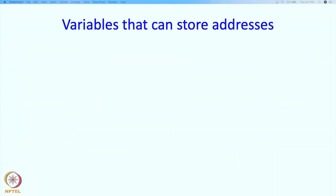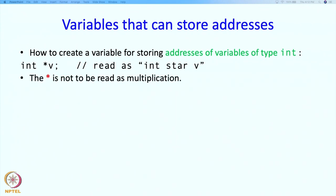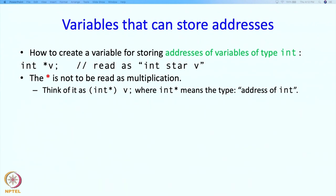Now we know how to print out or get to addresses. Next we see how to construct variables which can store addresses. To create a variable for storing addresses of variables of type int, we write int* v. This is pronounced as 'int star v'. The star when used in this manner is not to be read as multiplication. We can think of int* as an atomic type, meaning 'address of int', and v is a variable of that type.